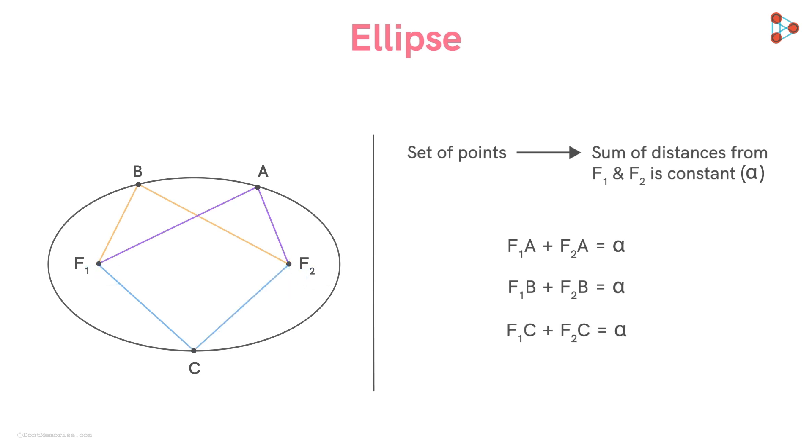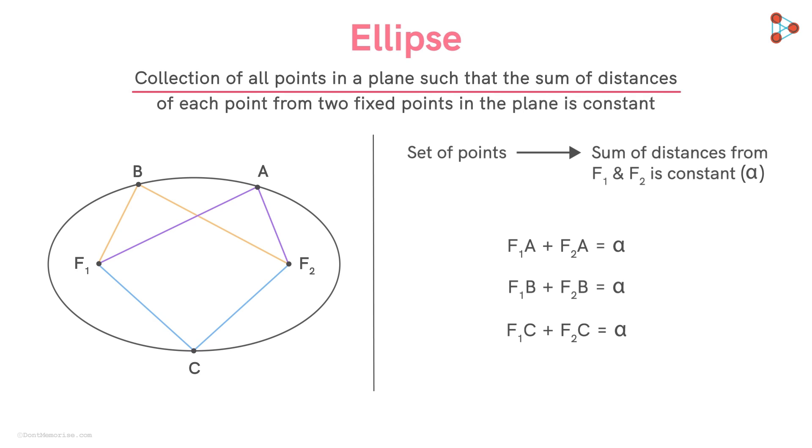So we see that the ellipse is a collection of all points in a plane such that their sum of distances from the two fixed points in the plane is constant.